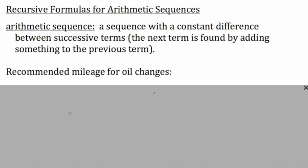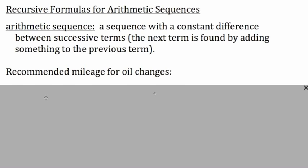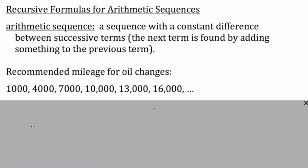Examples of arithmetic sequences can be found in the real world in many places. One place is in recommended mileage for oil changes. A certain kind of car might recommend an oil change after the first 1,000 miles. Then they might recommend oil changes each 3,000 miles thereafter. So 3,000 miles later would be 4,000 miles, then 7,000, then 10,000, then 13,000, then 16,000, and so on.